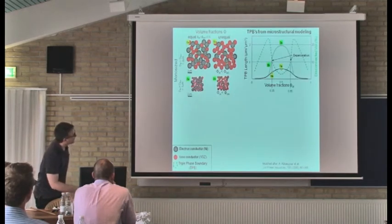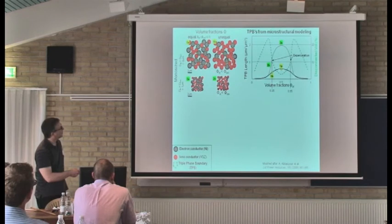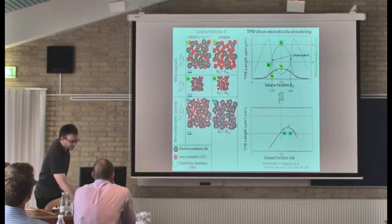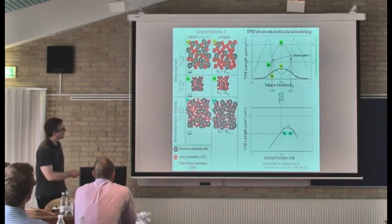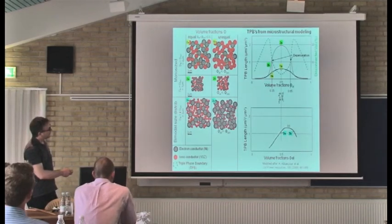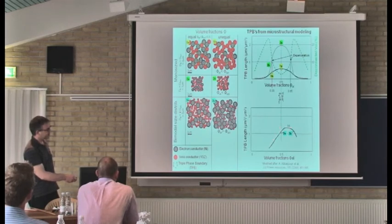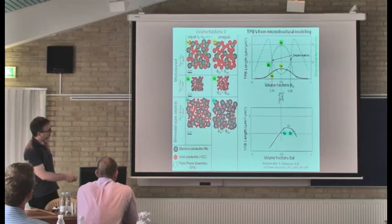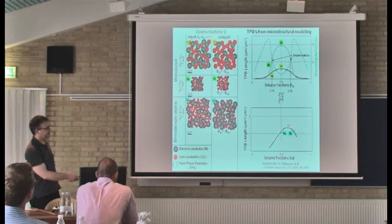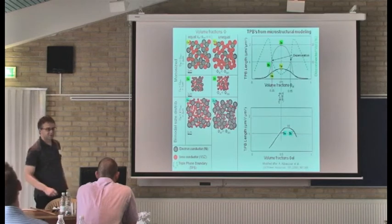When we go to smaller particles, we get higher TPBs. And once we get to different sizes for the two phases, this curve becomes asymmetric. So the maximum TPBs are reached, for example, when we have larger nickel particles, at a higher volume fraction of nickel to get the maximum TPB.